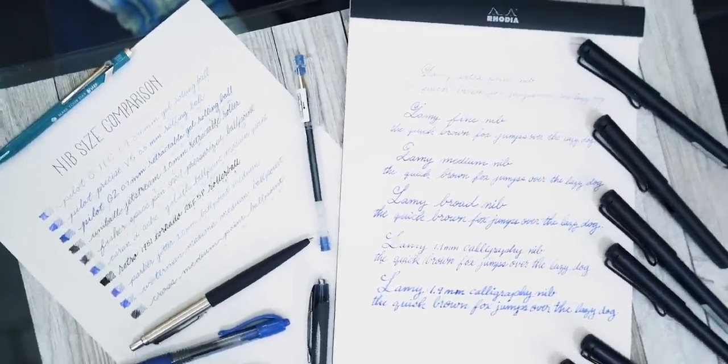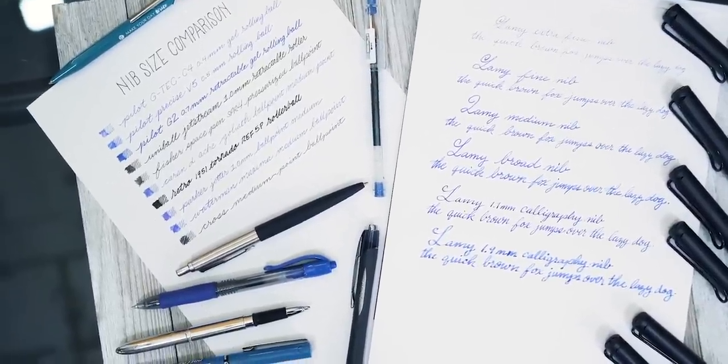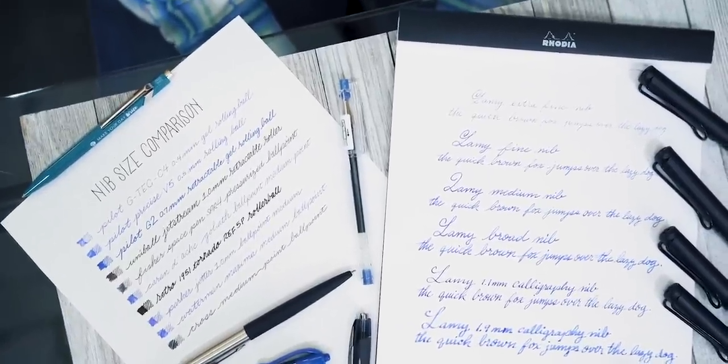Smaller stub nibs are more manageable as an everyday writer, but produce less noticeable line variation. The larger stub nibs produce more drastic line variation, but would not be practical for general purpose writing.